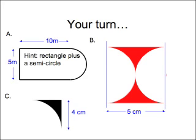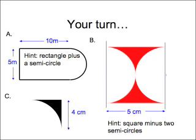Here are some hints. A is a rectangle plus a semicircle. B is a square minus two semicircles, but the diameter of each of the semicircles gives you the dimension of the square. C is a square minus a quarter of the circle. Again, the side of the square is equal to the radius of the circle. You might want to pause at this point to try it yourself.